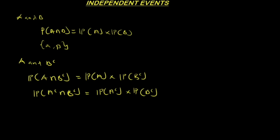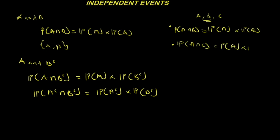Now let's look at some theories. For three events, A, B, and C are called independent if: the probability of A intersection B equals the probability of A times the probability of B; the probability of A intersection C equals the probability of A times the probability of C; and the probability of B intersection C equals the probability of B times the probability of C.